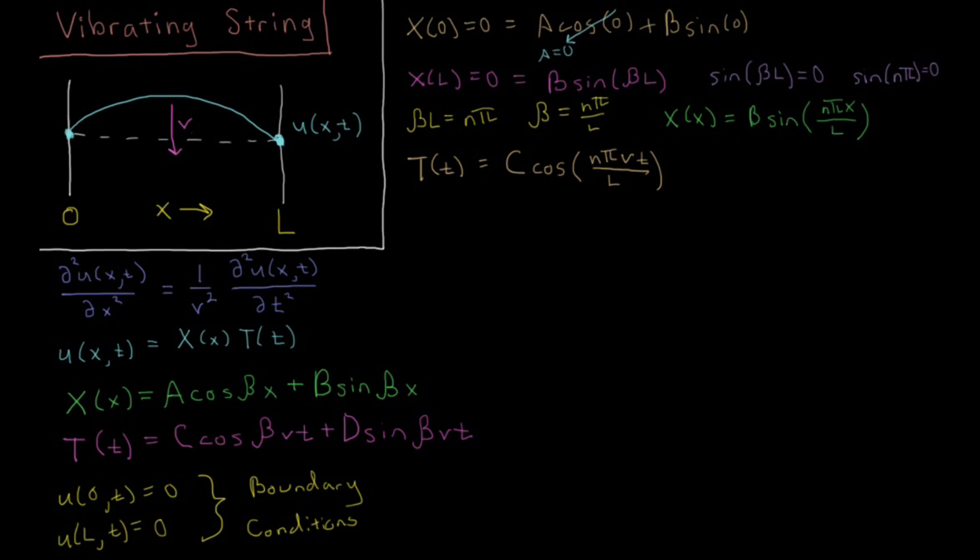So now we have basically our total equation here. We have u of x,t equals this constant times this constant. These are both arbitrary constants, so together we're just going to get one arbitrary constant out in front, which I'm going to call A. So we have A cosine n pi v times t over L, and then that is times the spatial part which is sine n pi x over L.